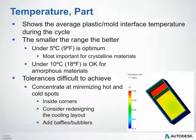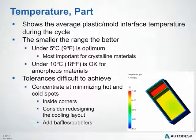The temperature part plot shows the average plastic-mold interface temperature during the cycle — essentially the mold surface temperature. A smaller range is better. For semi-crystalline or crystalline materials, keep that range under 5 degrees Celsius; for amorphous materials, under 10 degrees Celsius. If tolerances are difficult to achieve, focus on minimizing hot and cold spots, pay attention to inside corners, consider redesigning the cooling layout, or add baffles or bubblers in deep draws or deep pockets.